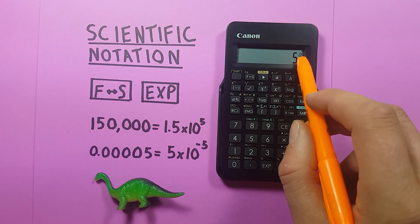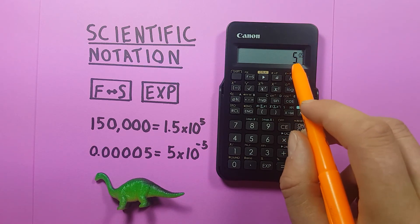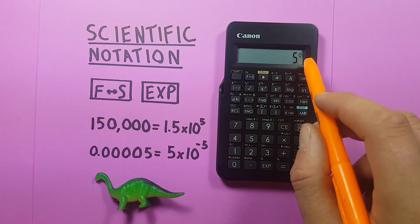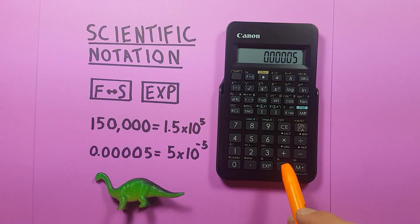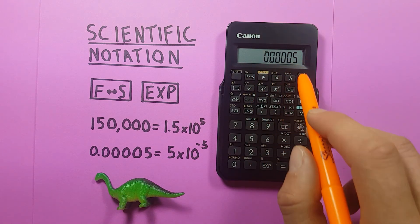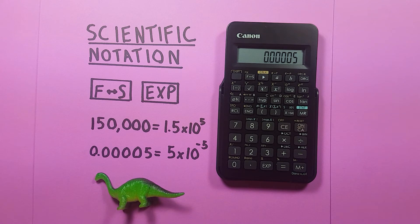There you see, a little negative sign has appeared, so here we have 5 times 10 to the power of negative 5. We can press equals and see there's that number we started with, 0.00005.